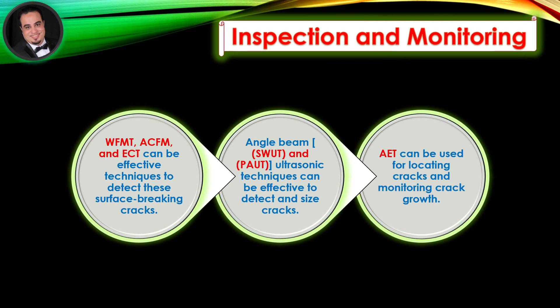Inspection and monitoring: wet fluorescent magnetic particle testing (WFMT), alternating current field measurement (ACFM), and eddy current testing (ECT) can be effective techniques to detect surface-breaking cracks. Angle beam shear wave ultrasonic testing (SWUT) and phased array ultrasonic testing (PAUT) can be effective to detect and size cracks. Acoustic emission testing (AET) can be used for locating cracks and monitoring crack growth.